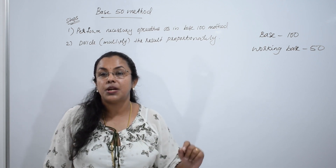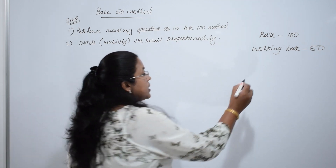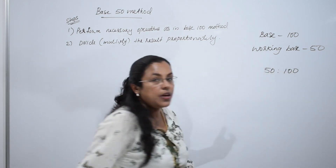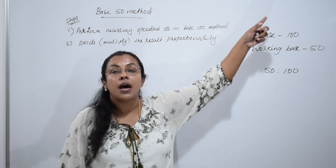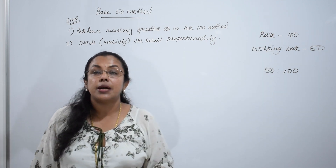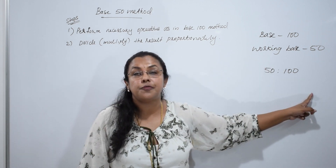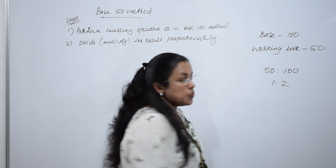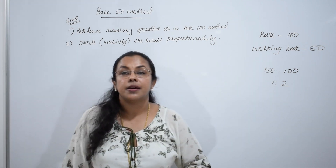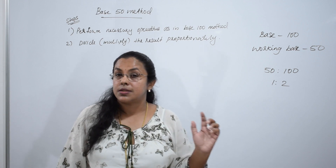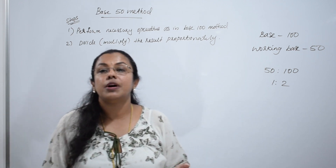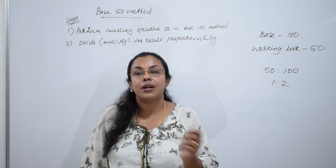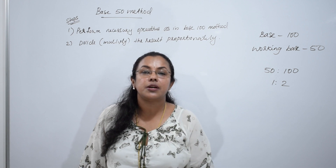Here we are taking 50 as the working base and 100 as the theoretical base. The ratio is 50 is to 100, that is 1 is to 2. So we will multiply or divide the left hand side using 1/2. I will explain it with the help of an example — then it will be clear to you.